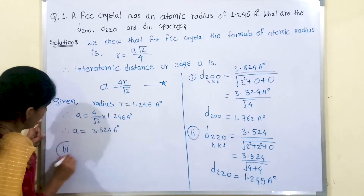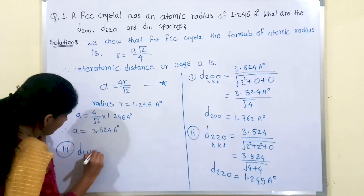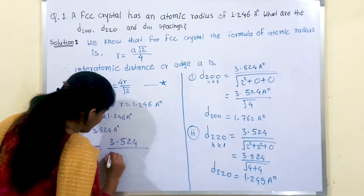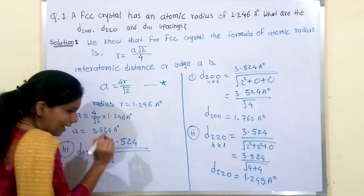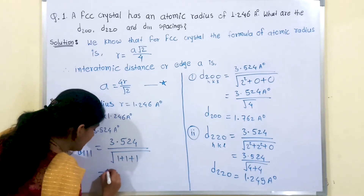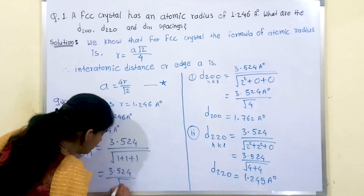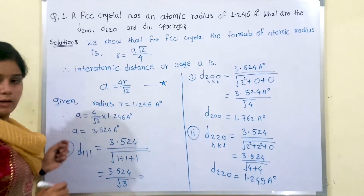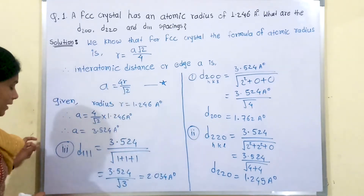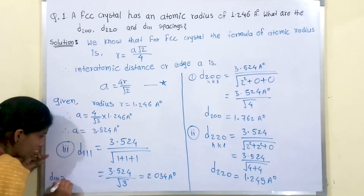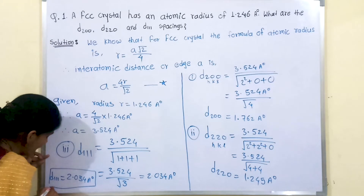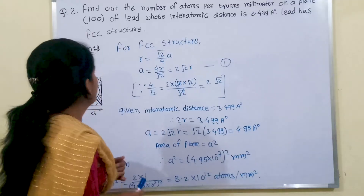The third one is D₁₁₁. We put in the value of A = 3.524 Å. All H, K, L values are 1, so we get √(1+1+1) = √3. Therefore D₁₁₁ = 3.524 / √3 = 2.034 Å. This is the interplanar spacing along the (111) plane.